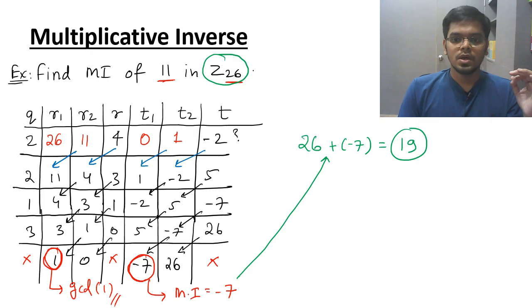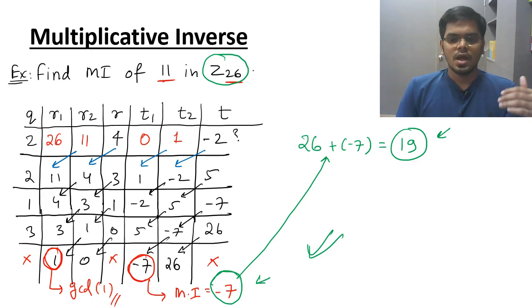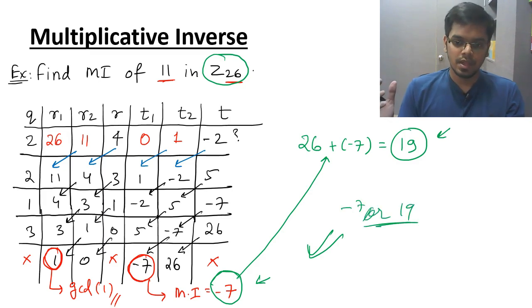So multiplicative inverse of 11 is 19 in the positive form or you can say it is minus 7 in the negative form. Both are correct. It depends how the examiner wants the answer. But if you ask my opinion, then I will say write both the answer minus 7 or you can write it as 19. Simple. So that was the concept of multiplicative inverse. I hope you have understood how to find multiplicative inverse.